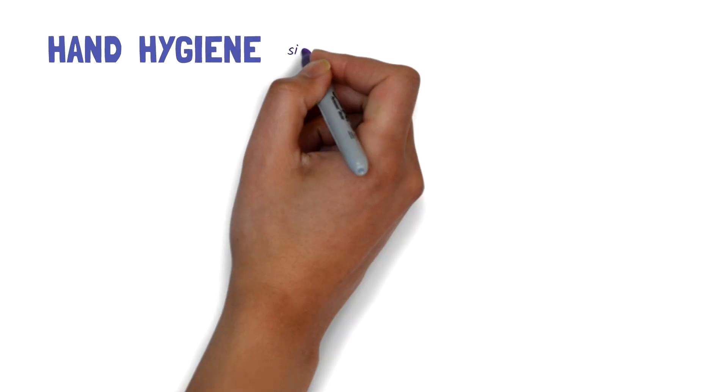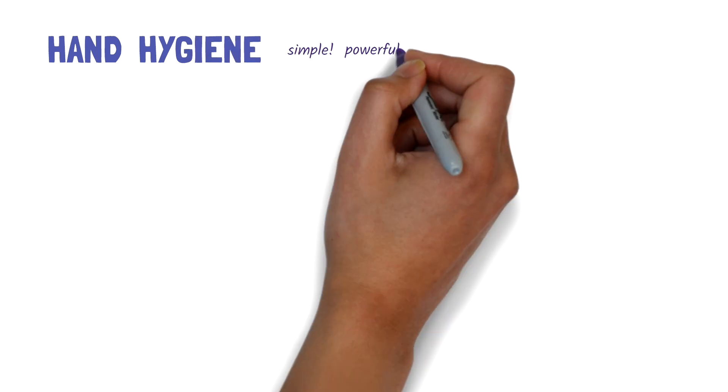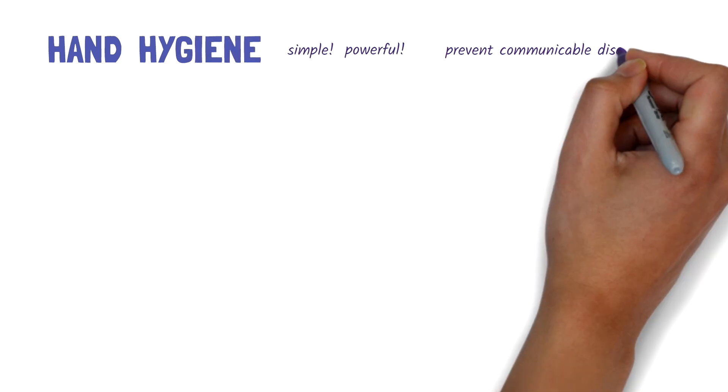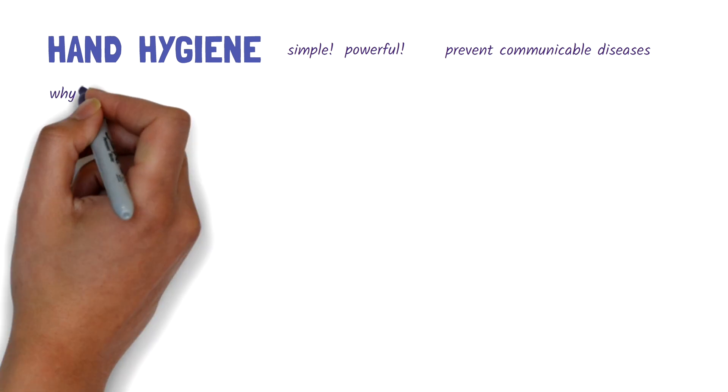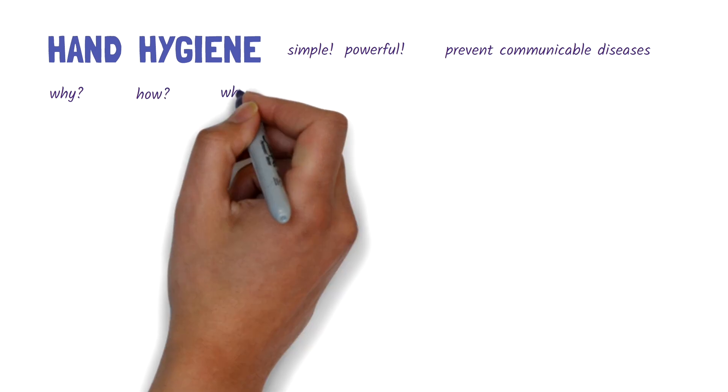Hand hygiene is one of the simplest, yet most powerful tools we have to prevent communicable diseases. In this video, we'll take a quick look at why it matters, how it works, and when to use them.